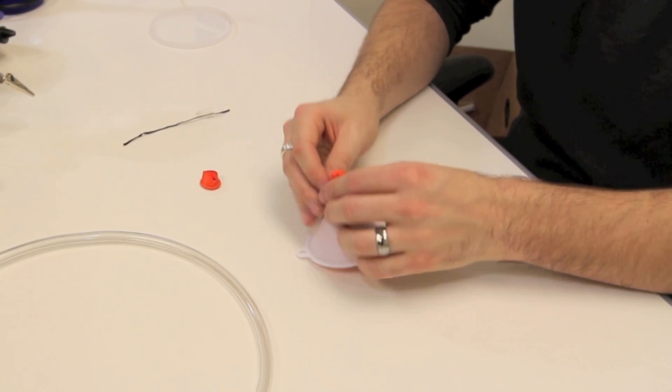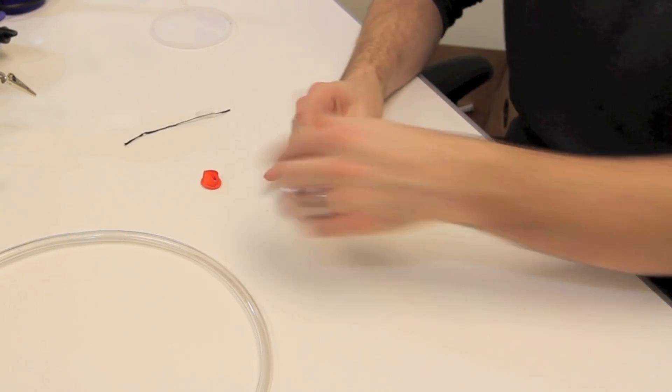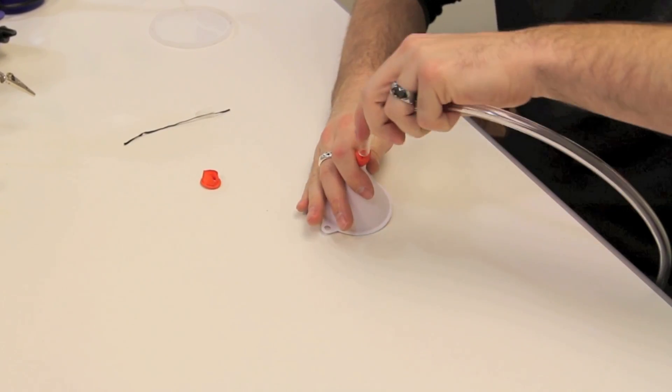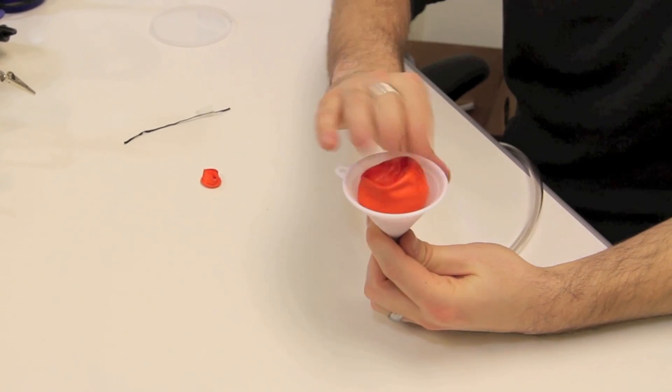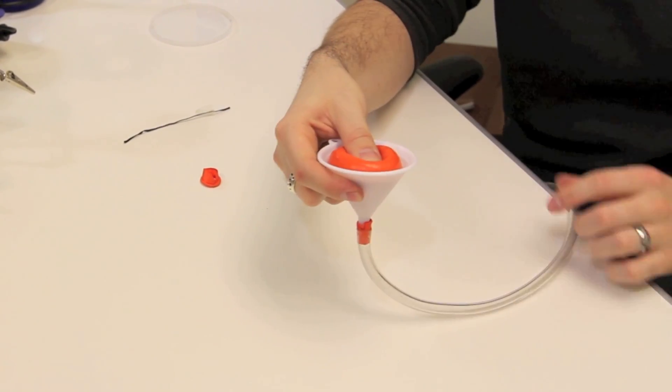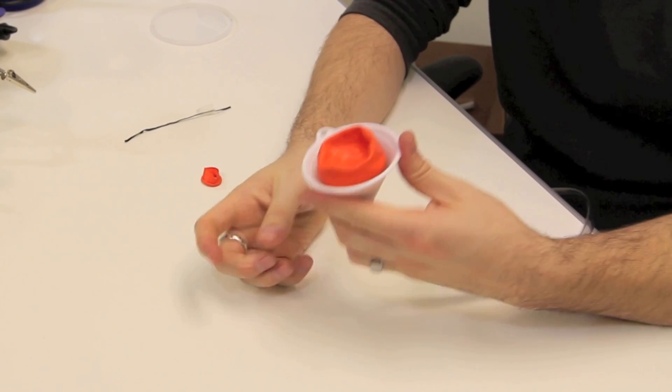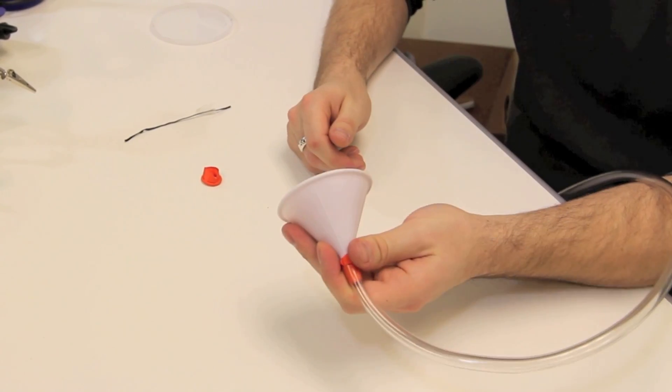And then we're just going to fold it down and then attach our hose. And that's it. Now when you press this into things and suck air out of it, it will conform to whatever shape that you press it into and you can pick it up.